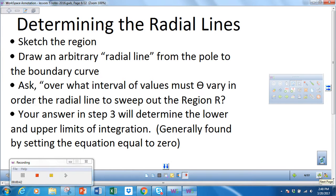Here are some tips to help you find the radial line. First, it's very important to sketch the region. Most often this will be a calculator active question on the AP exam, but it could be calculator inactive on the multiple choice. Then you're going to draw the radial lines from the pole to the boundary curve. Ask, over what interval of values must θ vary in order to sweep out the region? Your answer in step three will determine your lower and upper limits of integration.